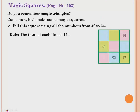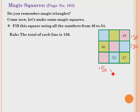This is the box given. You can take any number, but the total should be 150. If you add any row it should be 150; if you add any column it should be 150. The numbers must be from 46 to 54. So any column or any row you take, the sum should be 150.